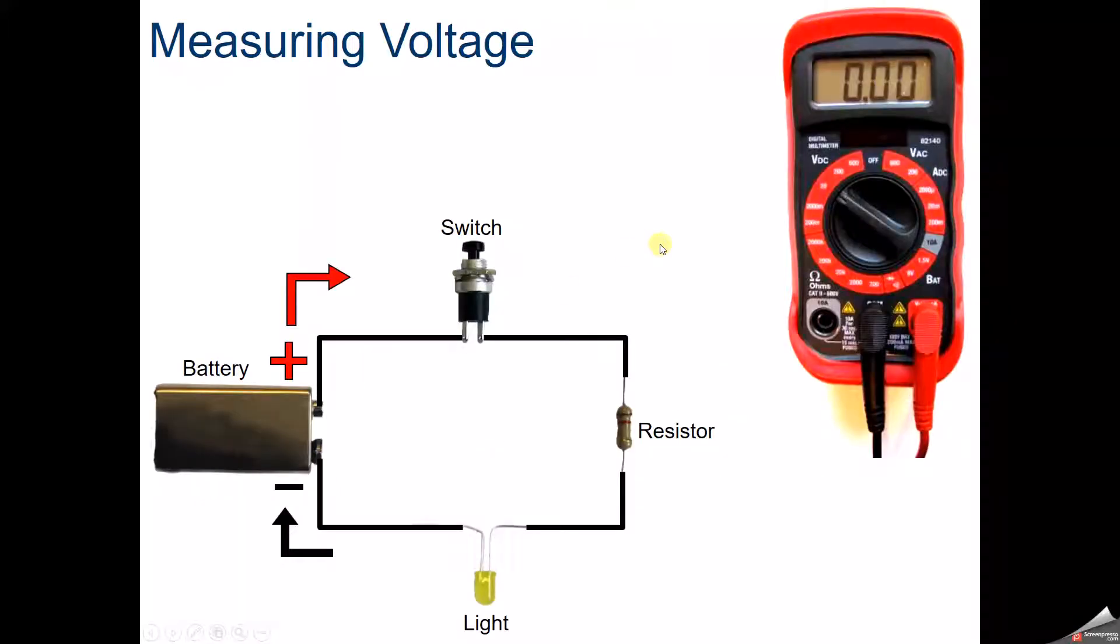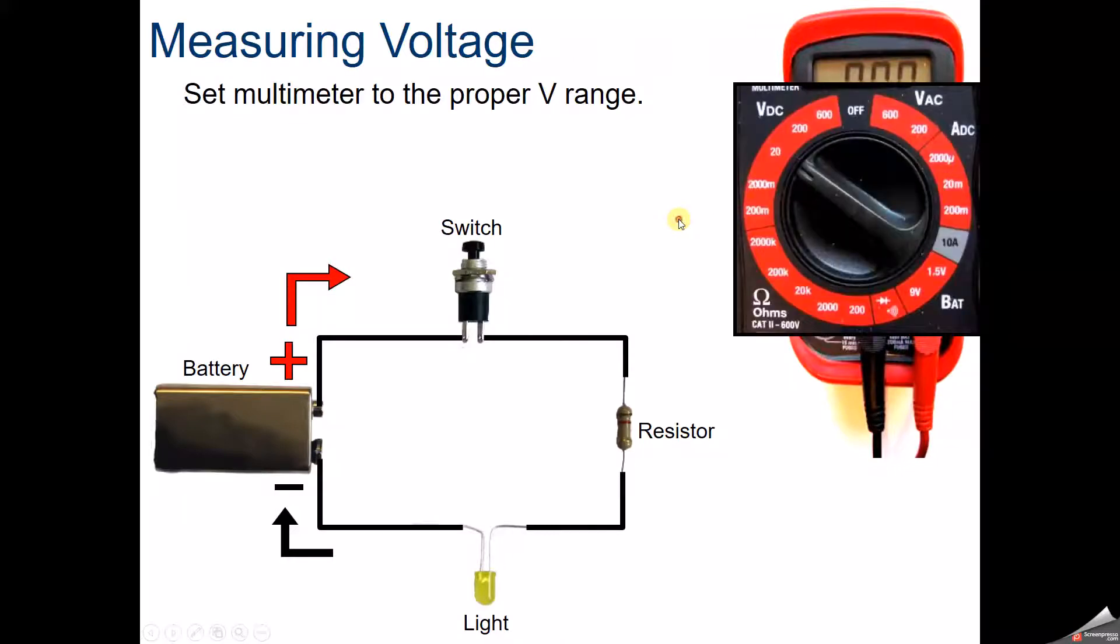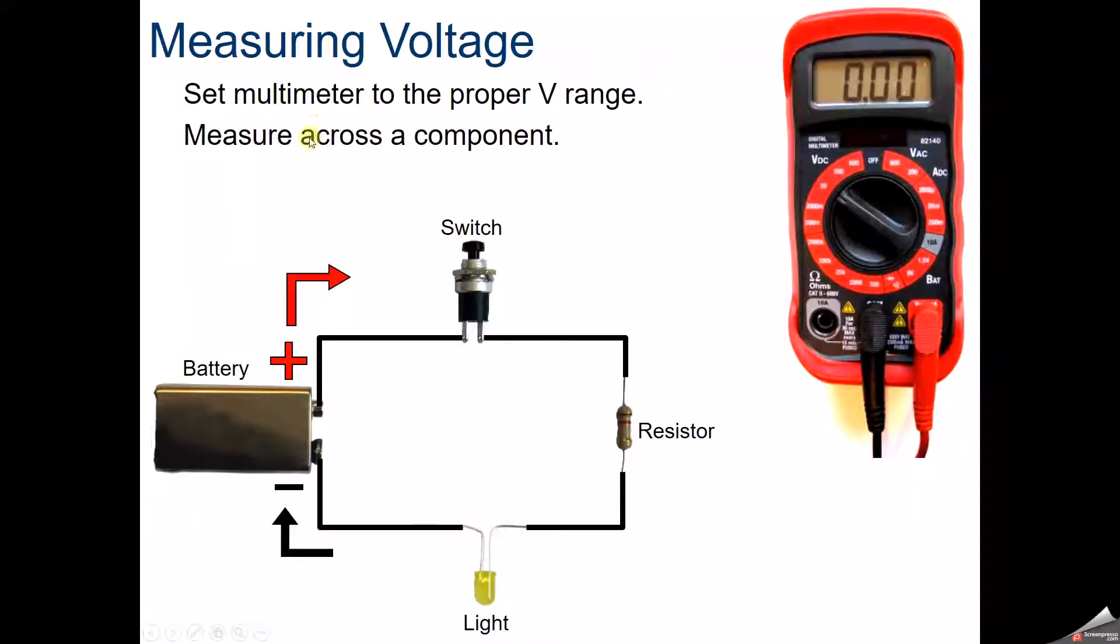How do we measure voltage? We grab a multimeter, set it to the proper V range, and measure across a component. We can measure voltage across the battery, the switch, the resistor, and the light. We take the two different leads on the two sides and get a measurement on our multimeter.